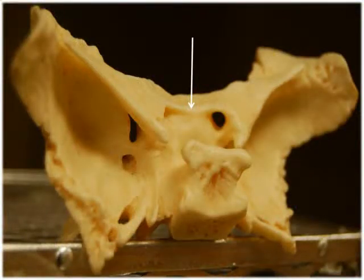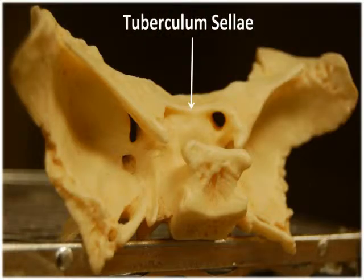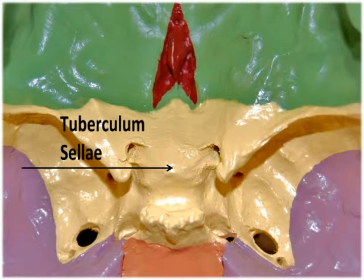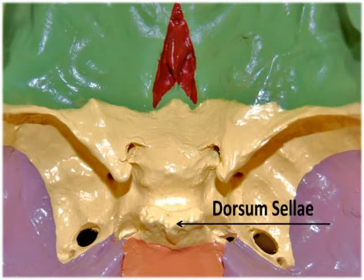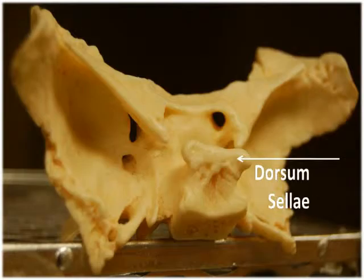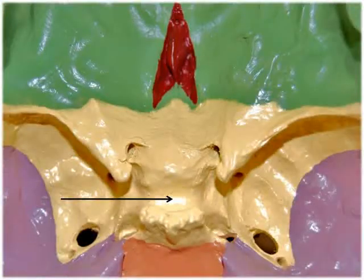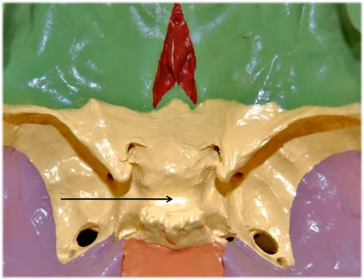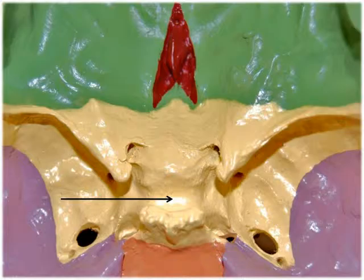The sella turcica resembles a Turkish saddle, which has a backrest. The tuberculum sellae is the anterior bumpy ridge on the sella turcica that forms the horn of the saddle. The dorsum sellae is the posterior part of the sella turcica that forms the backrest. The seat-like depression of the saddle is the hypophysial fossa, located in the middle of the sella turcica. It is none other than the pituitary gland, with the hypophysial fossa containing and protecting this very important gland at the base of the brain.